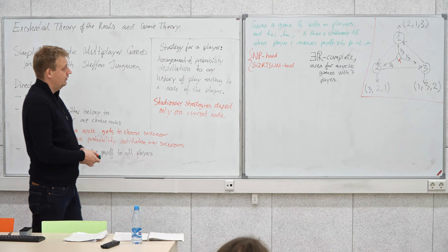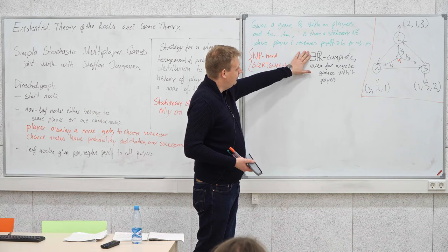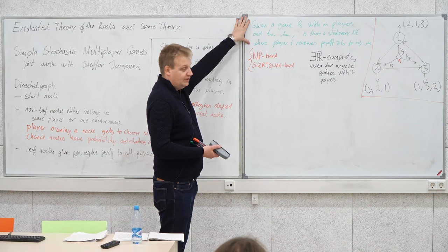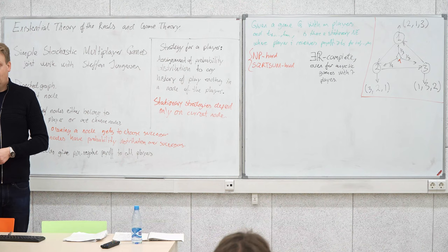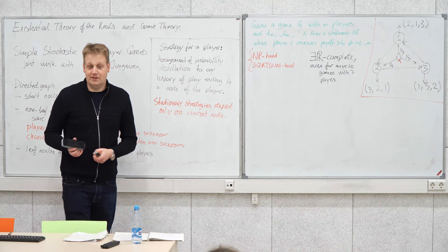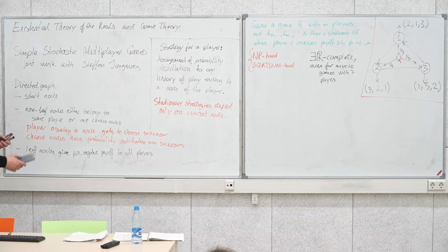To make this self-contained, I'll describe the complete problem from my previous lecture and use it to make a reduction to this problem. For membership: you can guess non-deterministically a stationary strategy profile, compute the payoffs of each player, and check that it satisfies the given constraint. Alternatively, write down an existential first-order formula.